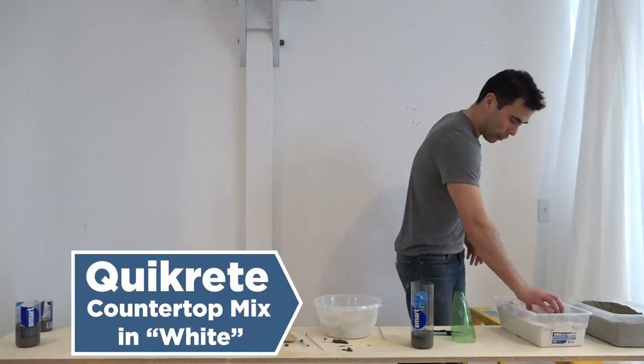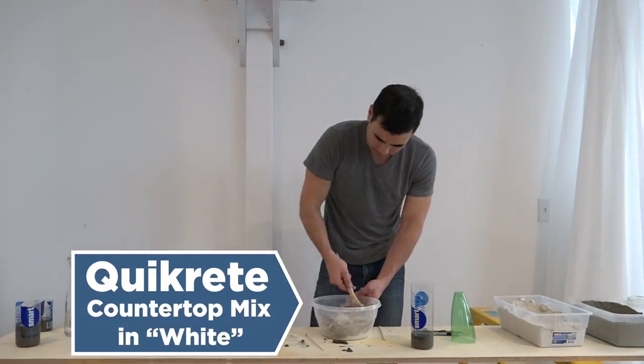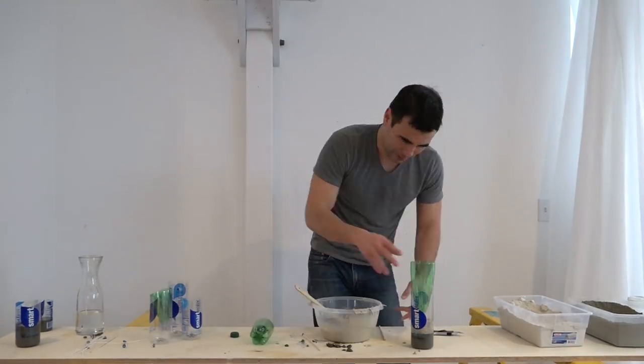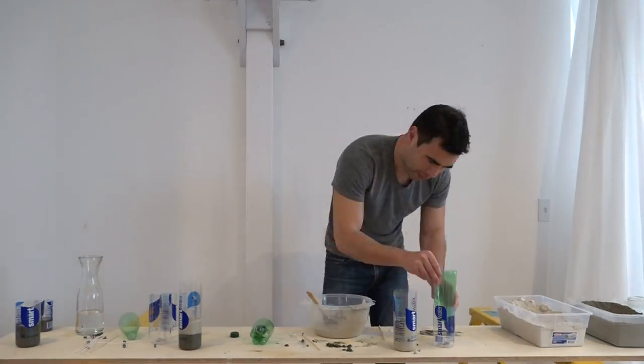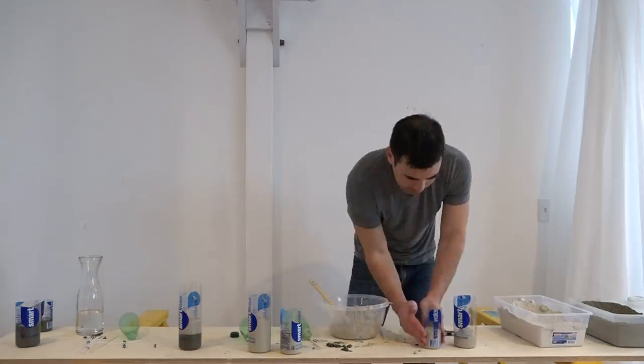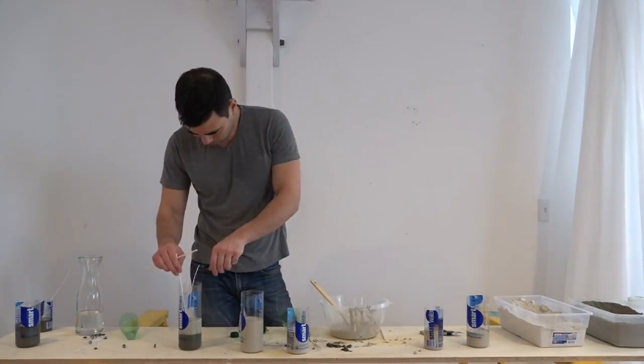I then switched to a white Quikrete countertop mix. This mix isn't as easy to find. You have to normally special order it from Home Depot, but it has this really cool white color and it doesn't have any large chunks of gravel or aggregate in it. So it pours really smooth.